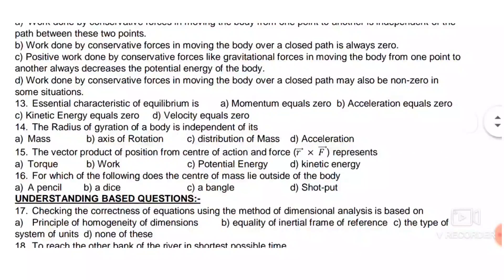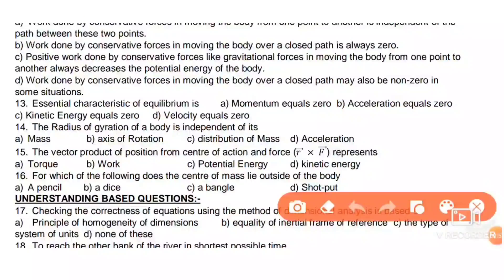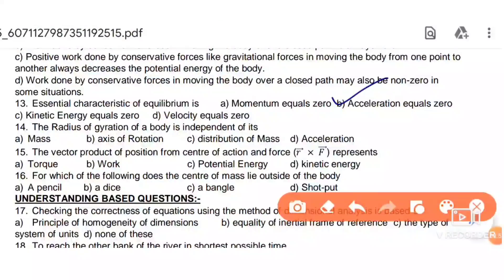Next: the essential characteristic of equilibrium is that acceleration equals zero. Also, the radius of gyration of a body is independent of acceleration.